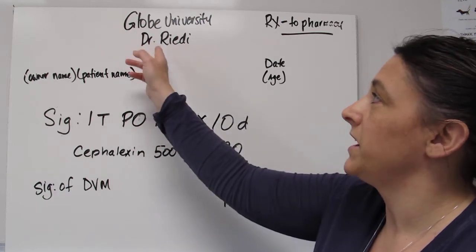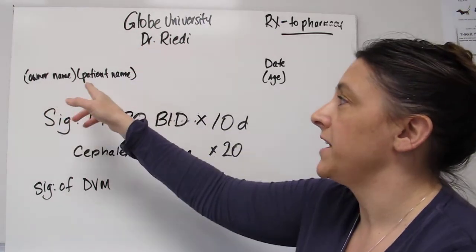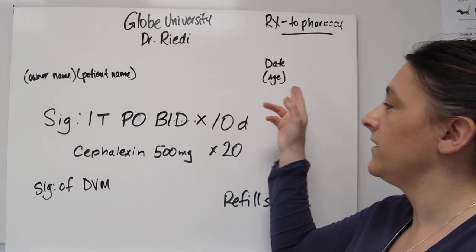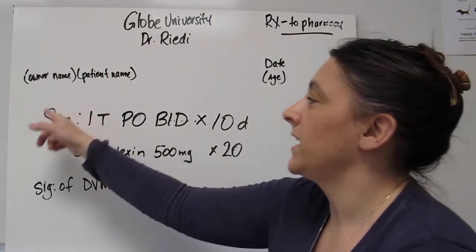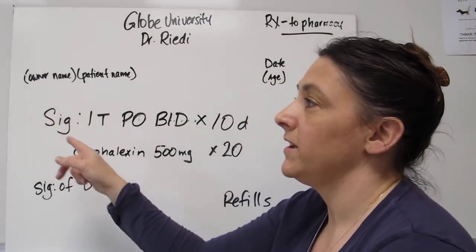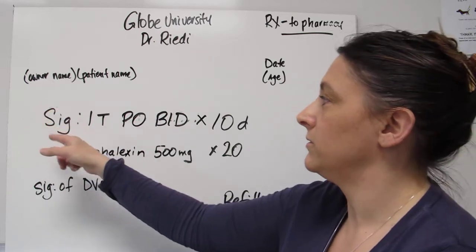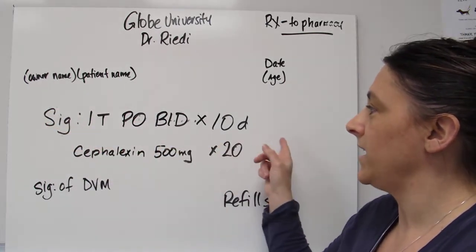It's going to have the name of the clinic, the name of the doctor, the owner's name, the patient's name, the date, and the age of the animal, and then it's going to have the SIG. So basically this is the directions. One tablet PO BID times 10 days.